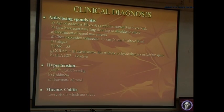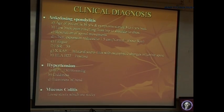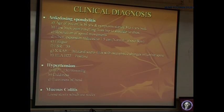And there is bilateral sacroiliitis with osteophytic changes. One of the strongest indicators in favour of the diagnosis is HLA-B27. This practically fulfills the typical classical criteria of ankylosing spondylitis.